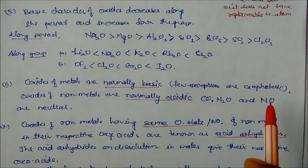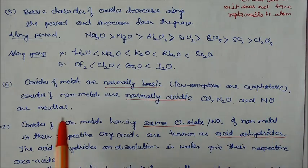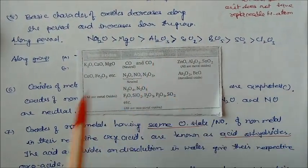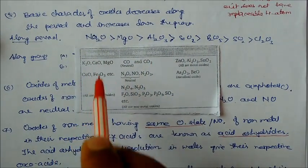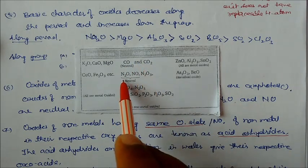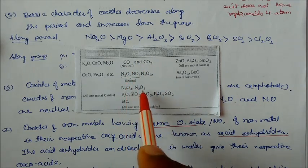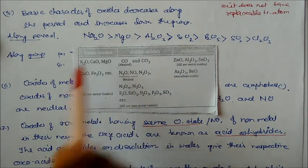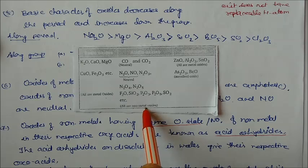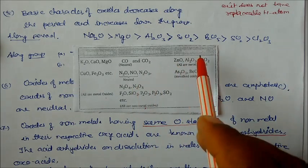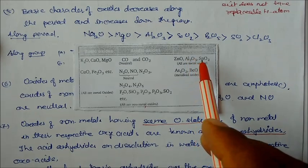Oxides of metals are normally basic. There are few exceptions which are important. Oxides of non-metals are normally acidic, like CO, N2O, NO. These are nitrous oxide, nitric oxide, all these are neutral oxides. So let us see some more examples. Here you can see in these cases, these are the basic oxides, this is the acidic oxides: CO, CO2, N2O, NO are neutral oxides, N2O4 neutral oxides. These are the acidic oxides. All metal oxides are basic oxides, and all non-metal oxides are acidic oxides.